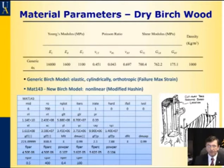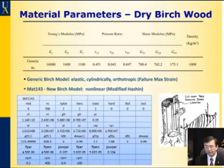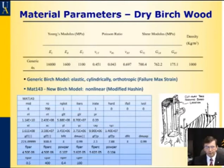Let's focus on the impact of the wing hitting the birch tree. There are two objects that impacted each other: the birch tree and the aluminum wing of the airplane. For the tree we use two different material models. The first is called generic, which is linear orthotropic, and the other is a special non-linear model developed by the Federal Highway Administration for trees, called MAT 143. For aluminum, we also use two models to build confidence about our results.